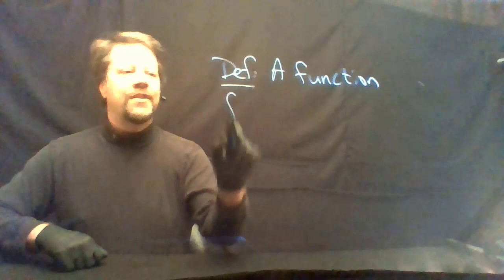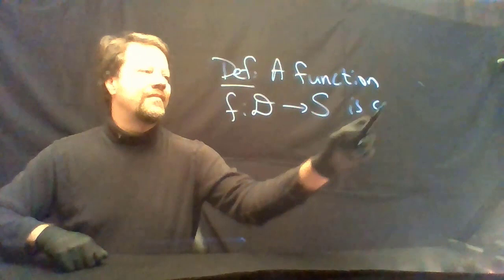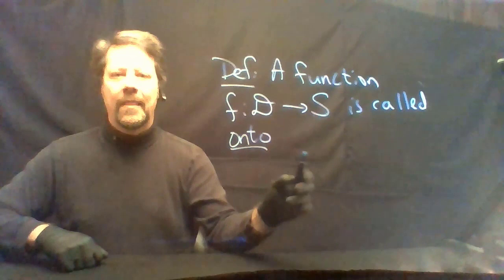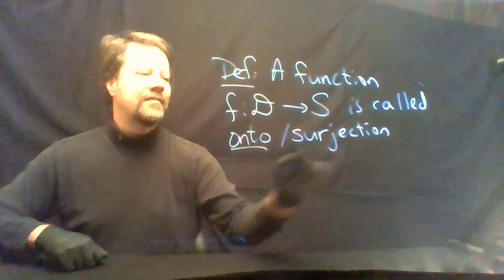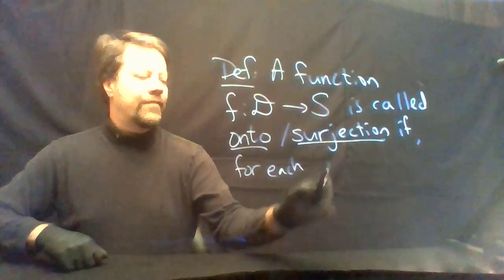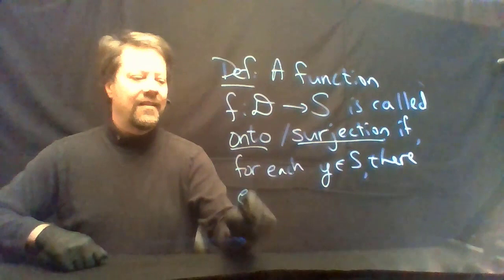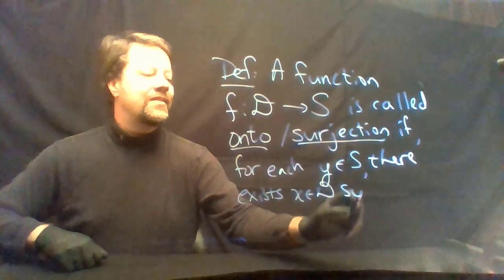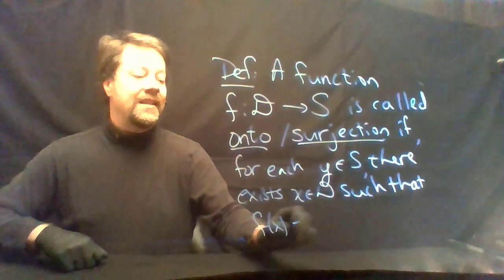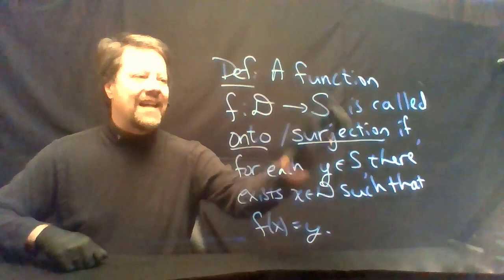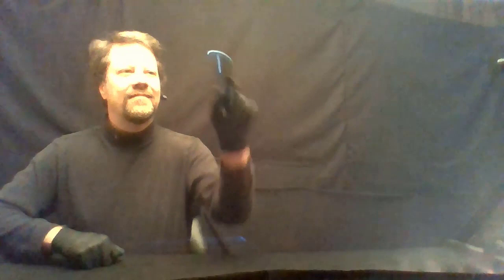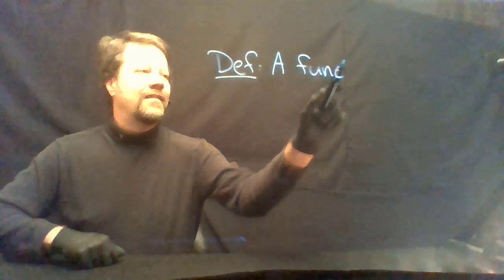A function f mapping some domain into some set is called onto, or a surjection, if for each y in the set S there exists x in the domain D such that f of x equals y. So for a surjection, the entire codomain is the range.